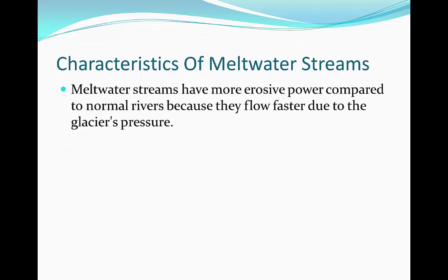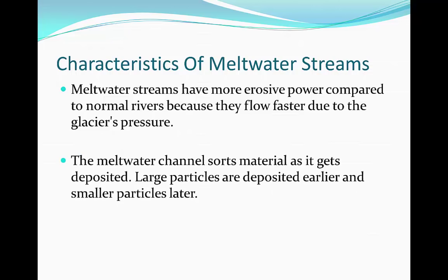A meltwater stream has more erosive power compared to that of a normal river because they flow faster due to the glacier's pressure. The meltwater channel deposits its source material as it moves. Large particles are deposited earlier and smaller particles later, because as the river moves down the valley it loses energy so it can only carry the smaller particles.